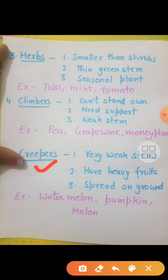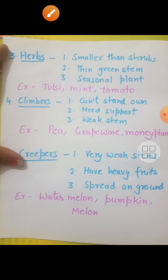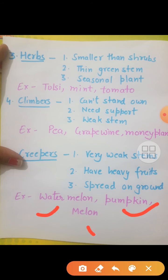And the last one is creepers. Creepers kya hote hai? Ye bhi very weak stem hoti hai — inki jo stems hoti hai baut weak hoti hai. Lekin ye climbers se alag hain. Climbers aur creepers mein difference yeh hai ki inke fruits baut heavy hote hai — baut bari hoti hai. Have heavy fruits. For example: watermelon, pumpkin, and melon.